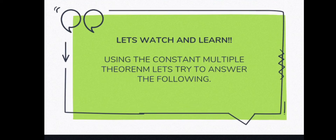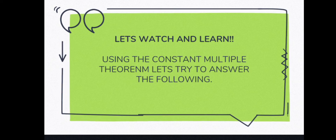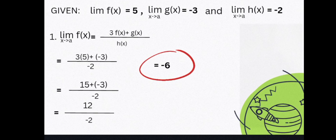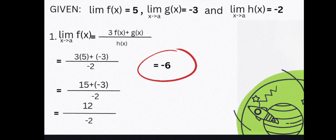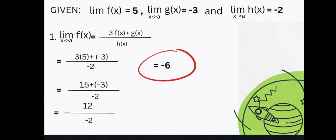Now let's apply the 9 theorems in the 5 examples here. Watch and learn. Here are the given limits: the limit of f(x) as x approaches a equals 5, the limit of g(x) as x approaches a equals negative 3, and the limit of h(x) as x approaches a equals negative 2.